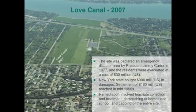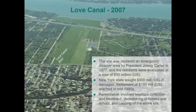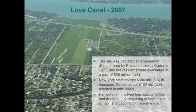The site was declared an emergency disaster area by President Jimmy Carter in 1977, and the residents were evacuated at the cost of $30 million. New York State sought $900 million in damages, and the settlement was $180 million. The remediation involved demolishing the homes and the school, capping the entire site, and controlling and treating leachate to prevent risk to aquatic receptors in the river next to the canal.